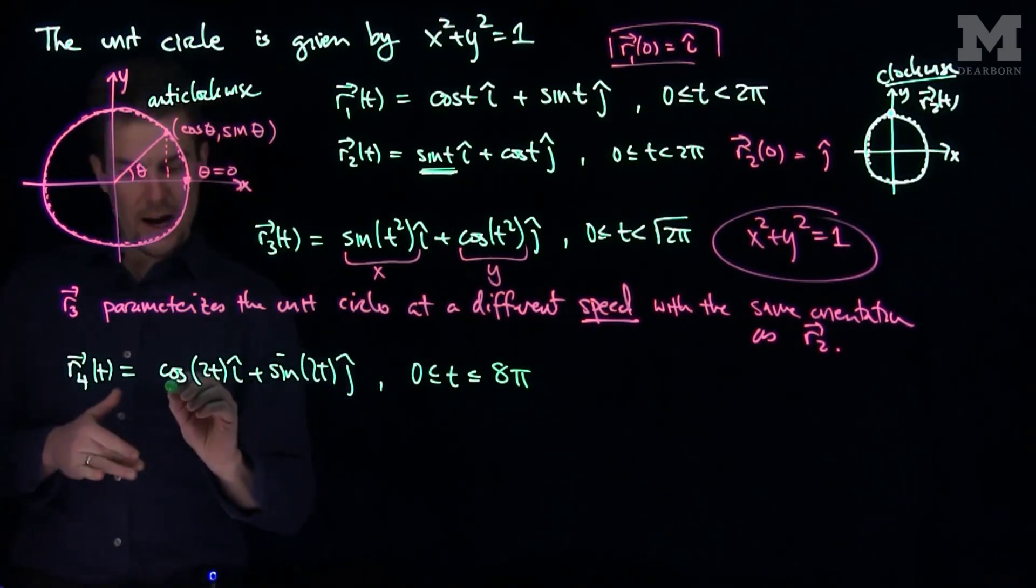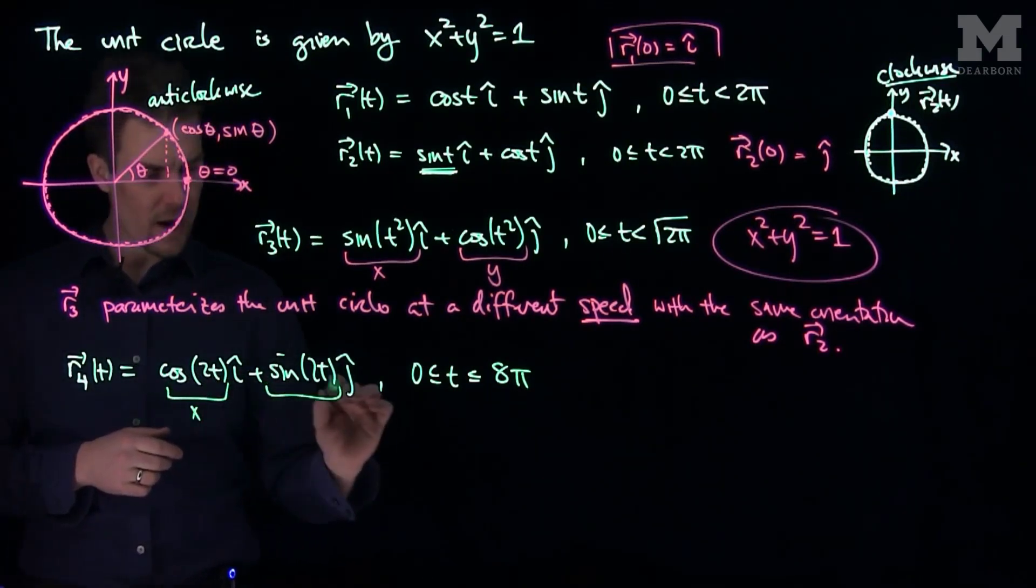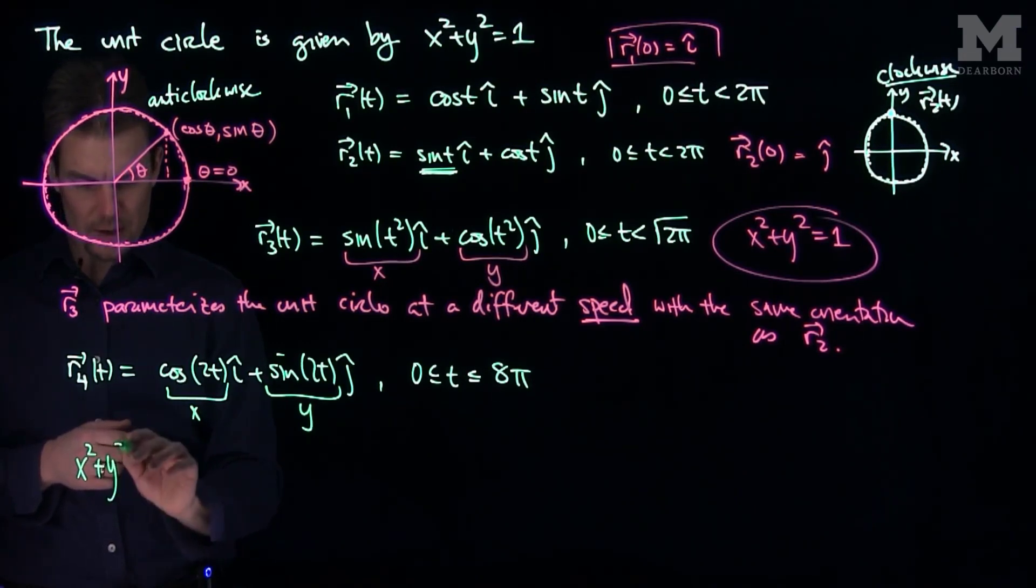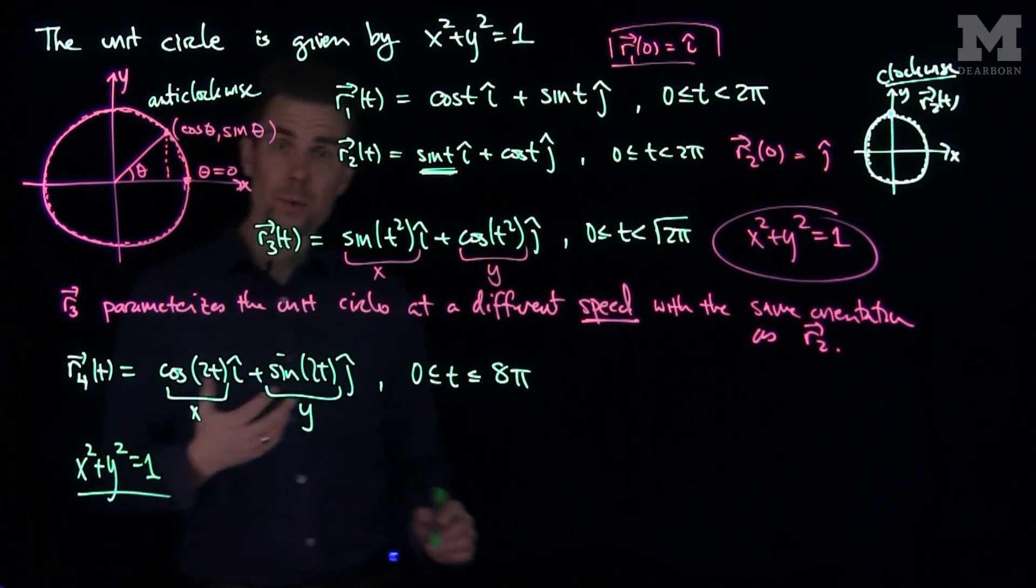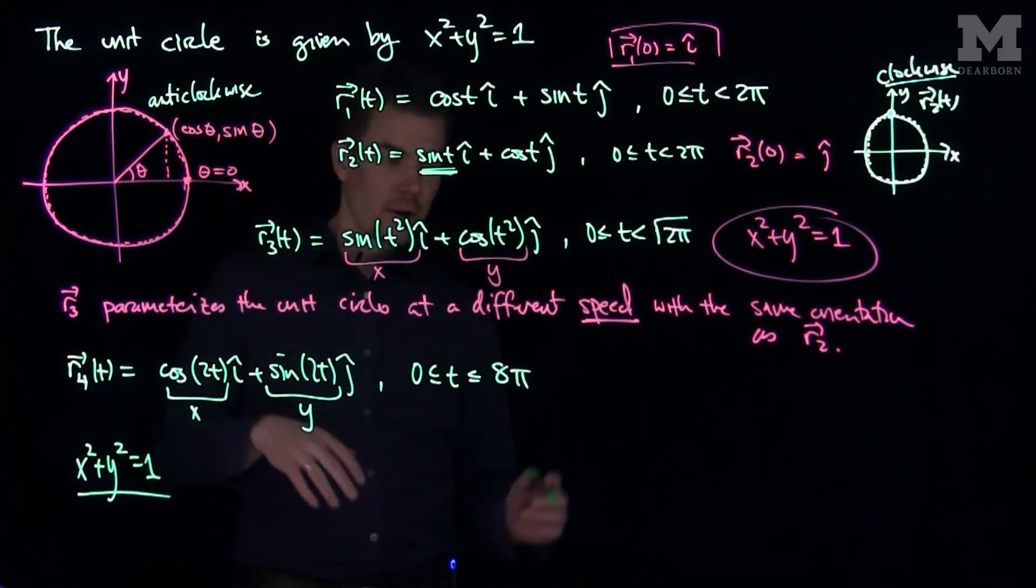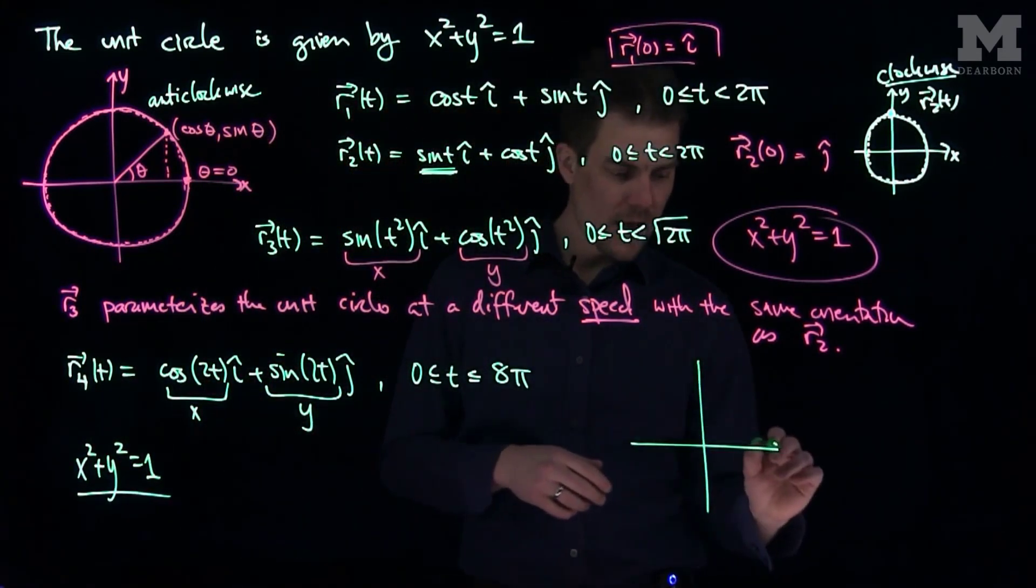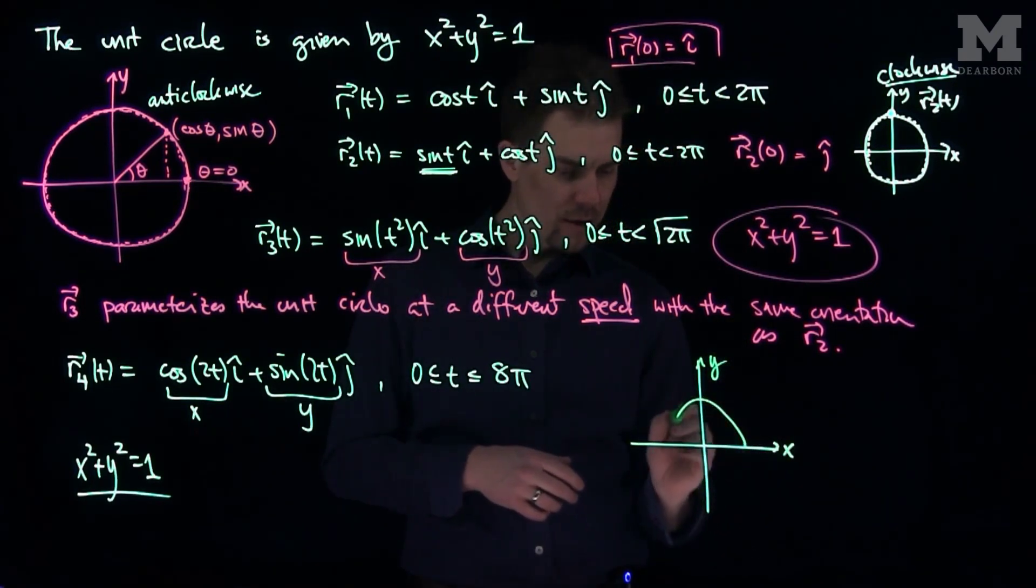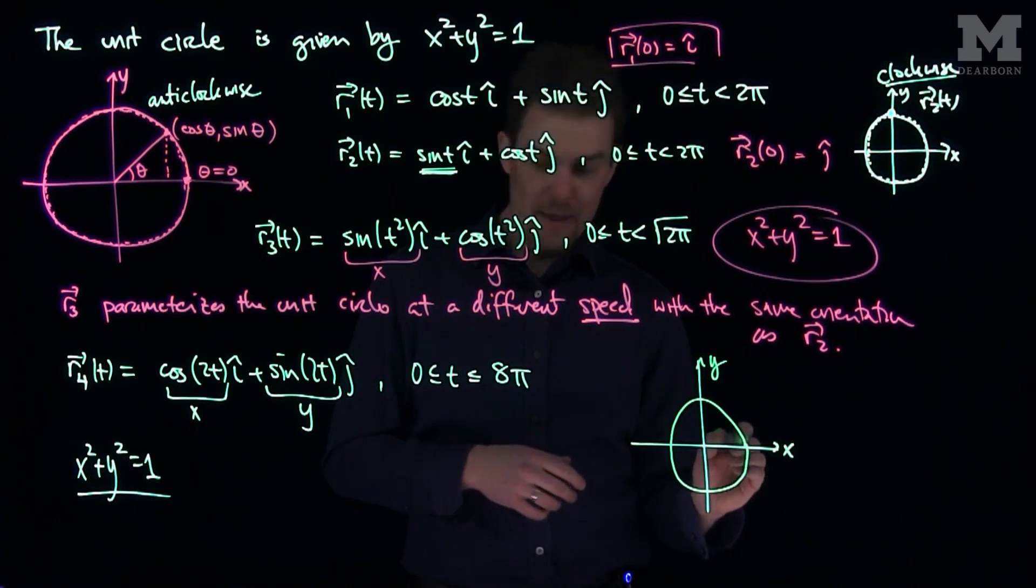So if this is our x and this is our y, then x² + y² = 1 by the Pythagorean identity, but we can notice what happens. For this curve, I'll have the same orientation as r1, but now what will happen, here's my x, here's my y, I'll go around the unit circle, and then...